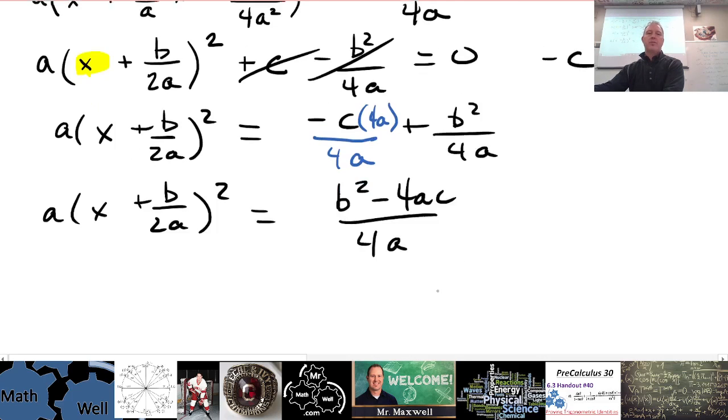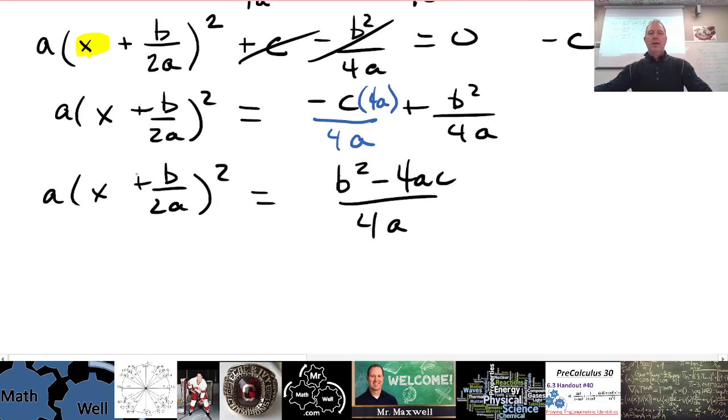If I divide both sides by a now to get rid of this a over here, basically I'm multiplying by 1 over a, so that becomes an a squared on the bottom over here. So this a on top, I divide both sides by a, I have another a in the denominator here, so that just becomes 4a squared. Now I have to get rid of this squared. How do I do that? I take the square root. What I do to one side, of course I have to do to the other.